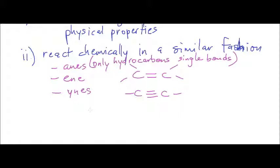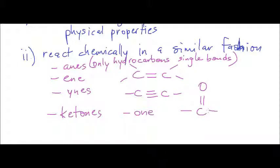Other functional groups that I've already done a video for are the ketones. Ketones have the ending of -O-N-E, and ketones have a carbon double bonded to an oxygen in the middle of some kind of R group. I'm going to draw the R and an R prime, which means we've got different types of alkyl groups that exist on both sides of the carbon.